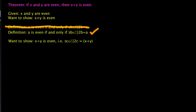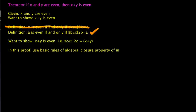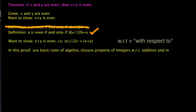One more thing we need to know is what can we use. In this proof, we will use only basic rules of algebra, the closure property of the integers with respect to addition and multiplication, and the definition of even — and that's it. Using only those tools, we can show that x plus y is even.